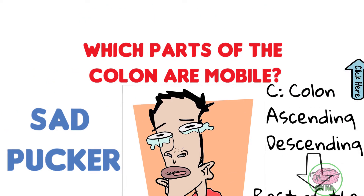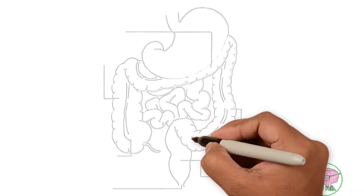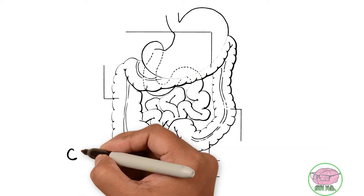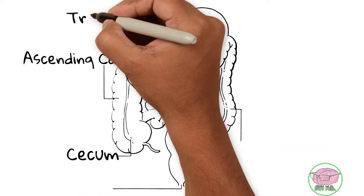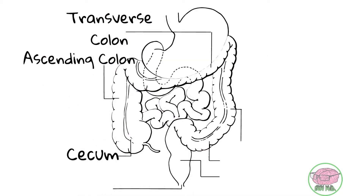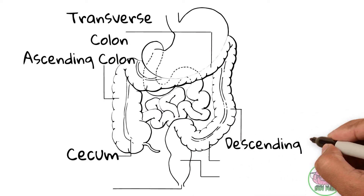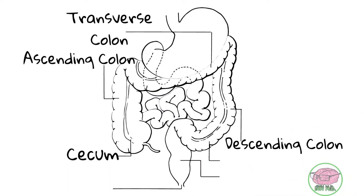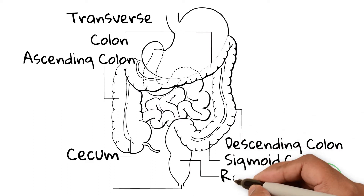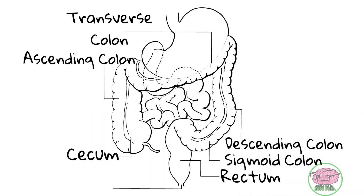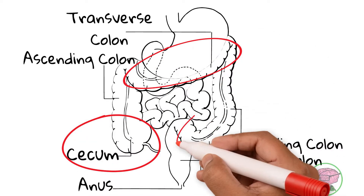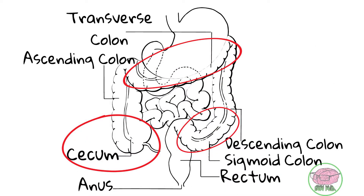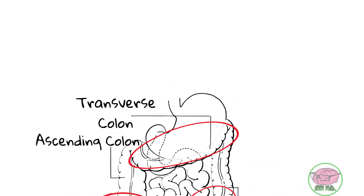So which segments does the colon have? We have the cecum, the ascending colon, transverse colon, descending colon, the sigmoid colon, the rectum, and the anus. The cecum, the transverse colon, and the sigmoid colon are the ones that are mobile.